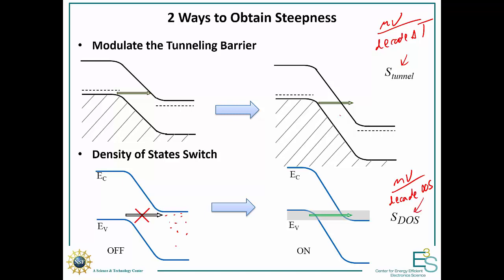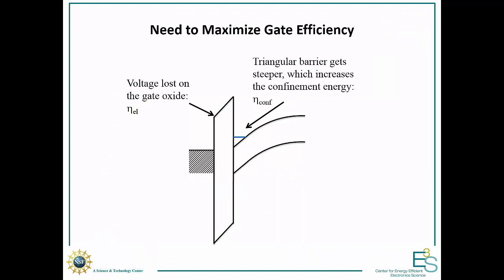We have these two measures of steepness, and in any given tunneling junction both mechanisms will be present, so the steepest one will dominate. In addition, when we try to build a transistor, there's a gate efficiency that comes into play — actually two types. The first is electrostatic gate efficiency: as we apply voltage on the gate, we lose some voltage across the gate oxide. There's also a quantum confinement efficiency, because as we pull the barrier down, the quantum well becomes steeper, pushing the energy level up slightly, losing a little efficiency due to the changing shape of the triangular well.